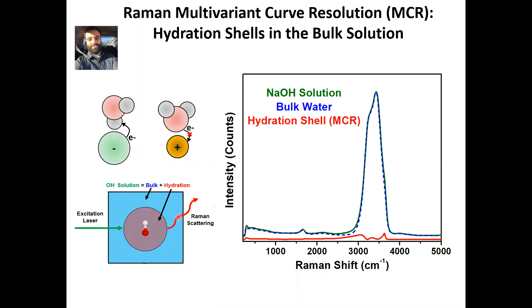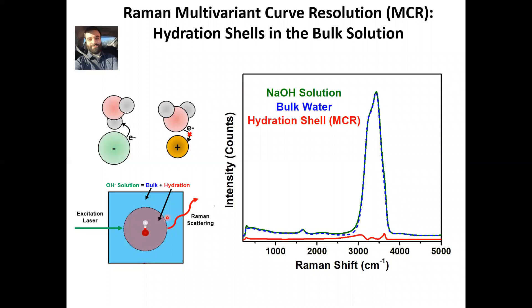We dissolve the solute in the solution — in this case, it's the hydroxide anion. The algorithm allows us to pull out information on the hydration shell from a Raman spectrum. Some of that data is shown over here on the right.